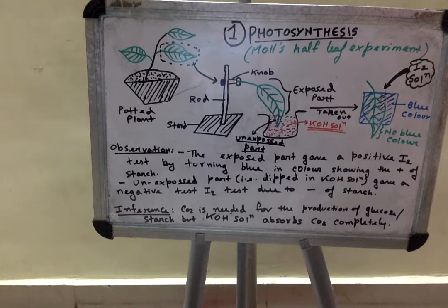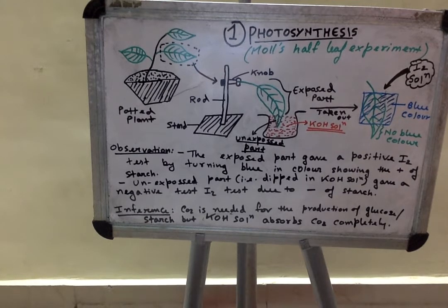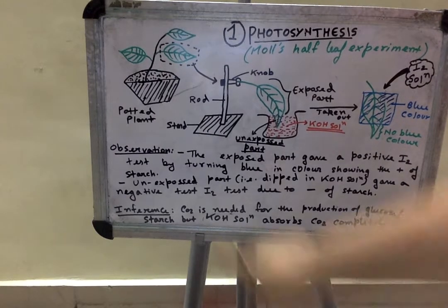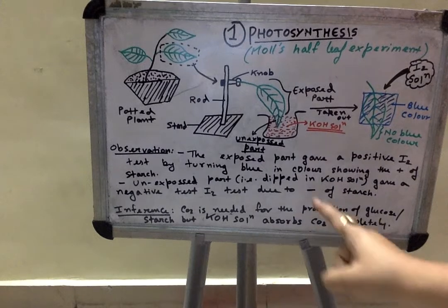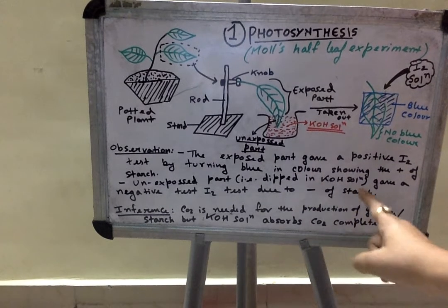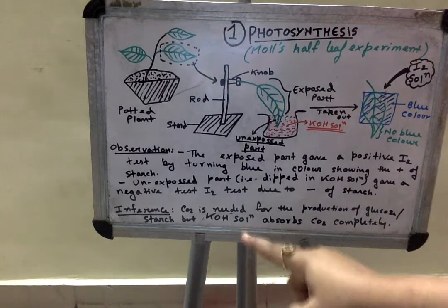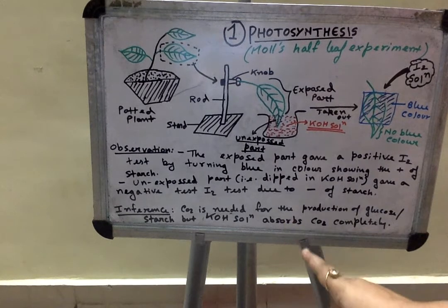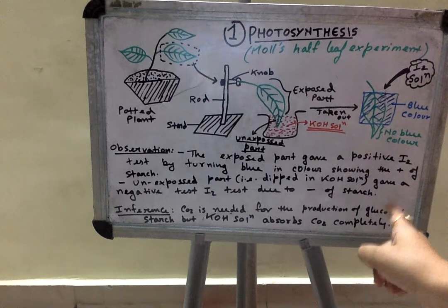As I have already described in my previous video, glucose is polymerized into starch, and glucose synthesis is possible only if carbon dioxide is available to the plants. The unexposed part, that is the part which was dipped into KOH solution, gave a negative iodine test due to absence of starch.